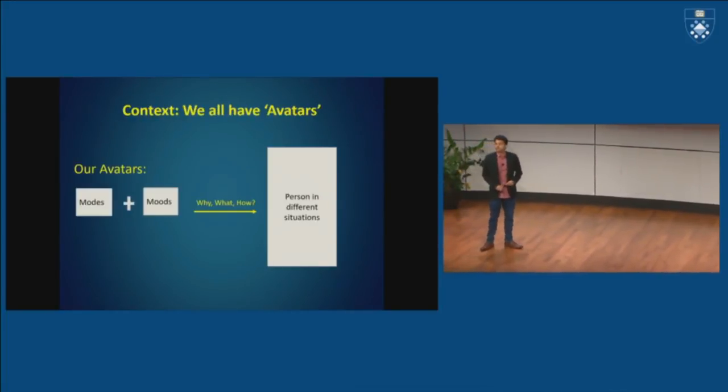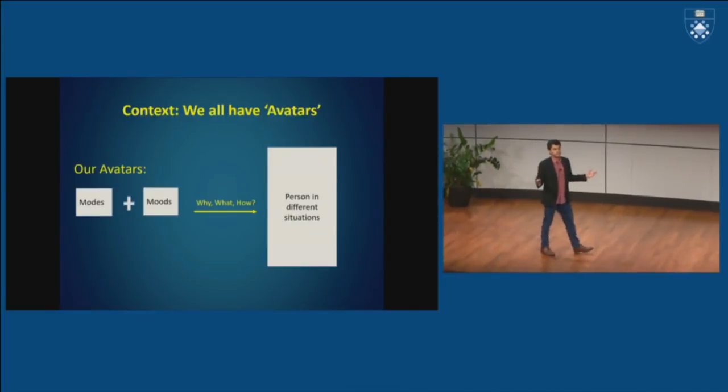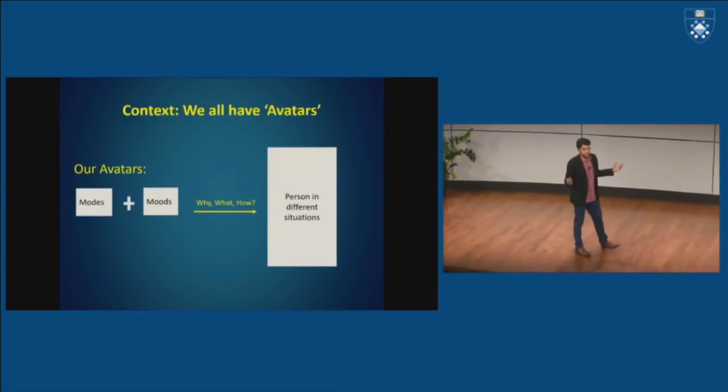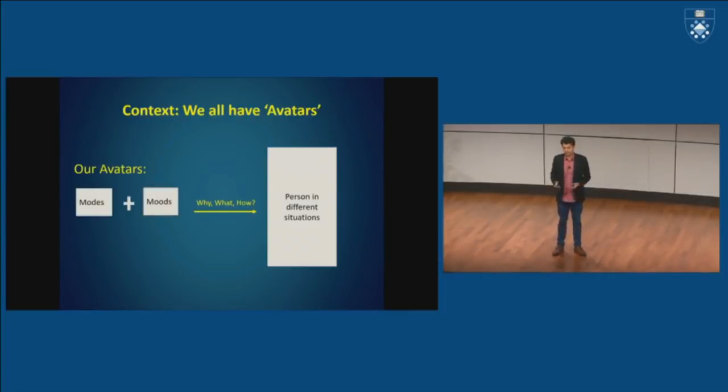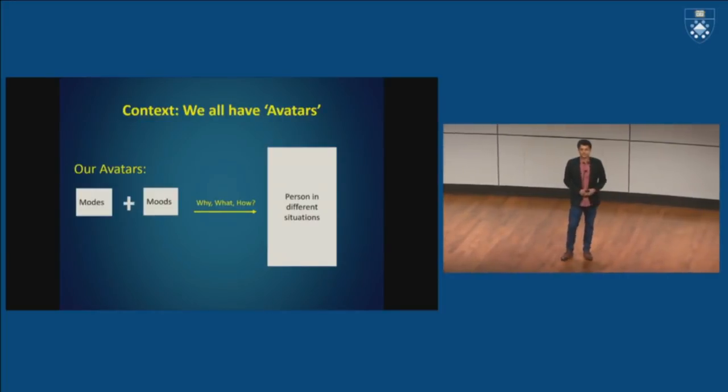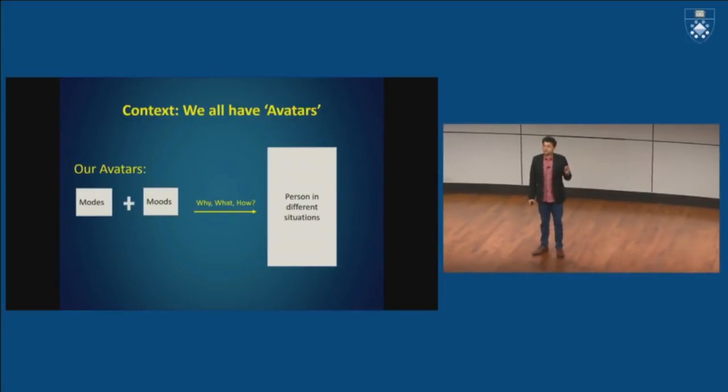So let's start with one example of context. So what do I mean by context? What I mean is, we all have multiple avatars, right? So these avatars are shaped by the moods and our moods. Why are we here? What are we thinking right now? How did we arrive at a certain decision-making process? Turns out that the data that is generated from your smartphone gives us very crucial insights into these questions, the why, the what, and the how.